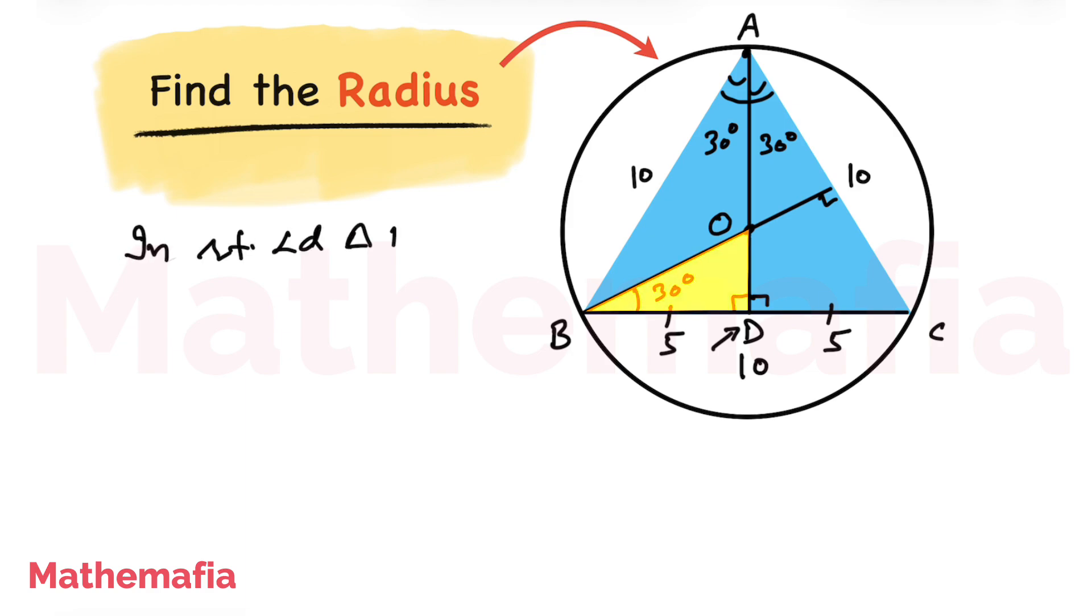cos 30 degrees will be equal to base over hypotenuse, which means it is BD over BO. This implies square root 3 by 2 is equal to BD is 5, and BO is the radius of the circle. This implies radius is equal to 10 divided by square root 3. That's my answer.